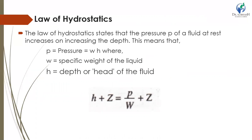The law of hydraulics states that the pressure P of a fluid at rest increases with depth. That is, P = W × H, where W is the specific weight of the liquid and H is the depth or head. The potential head H, defined by the position, gives total head represented by H + Z. So H + Z = P/W + Z, where P/W is pressure head and Z represents potential energy.